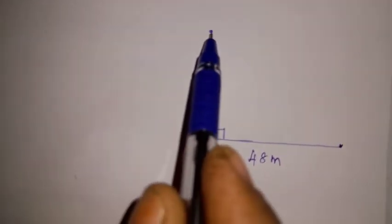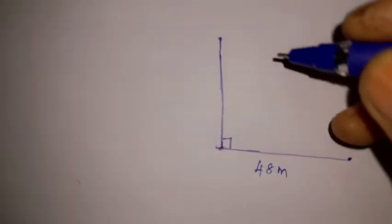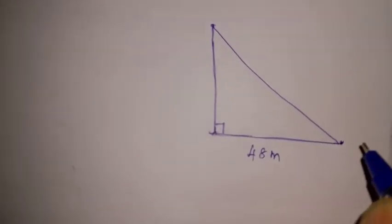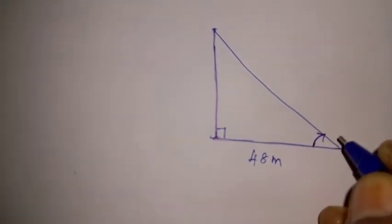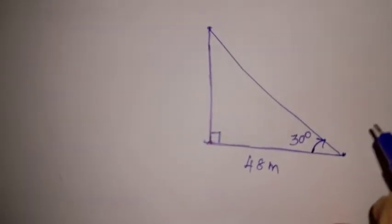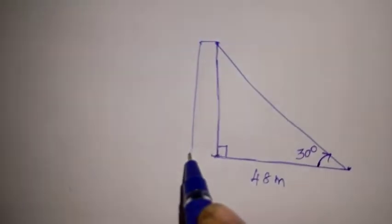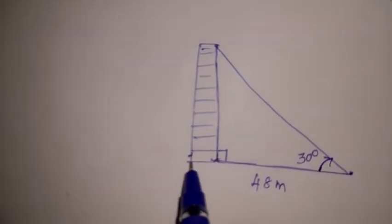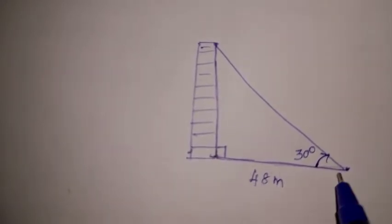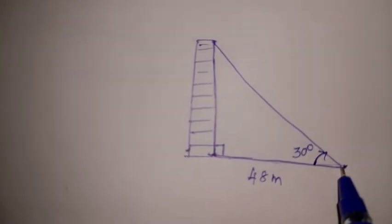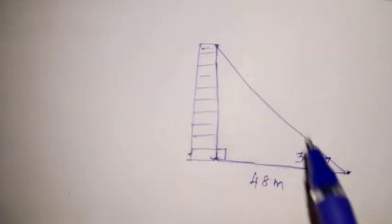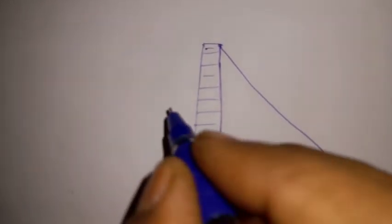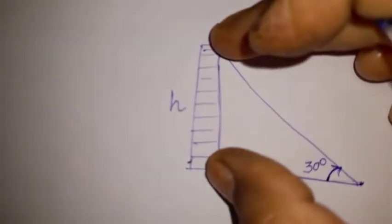From the point on the ground, we look up to the top of the tower — that angle of elevation is 30 degrees. The ground level is straight and horizontal, and the angle of elevation is measured from that horizontal line. The question asks us to find the height of the tower.